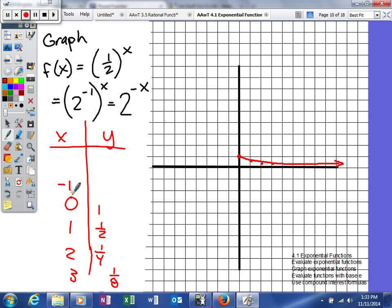And then we can also plug in some negative values. We could either do 1/2 to the negative 1 power, or say it would be 2 to the negative 1 power, which would be 2 to the 1st. So it will be 2, negative 2 will give us 4, and then negative 3 will give us 8.